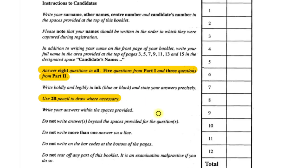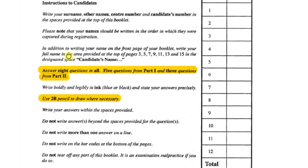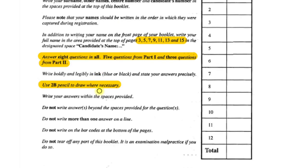When you are drawing, make sure you use your pencil. Then the general other instructions: write your candidate number, fill in the questions that you answered, and fill in the other information. In addition to writing your name on the front page of the booklet, also write your full name in the area provided on top of pages 3, 5, 9, 11, 13, and 15. This is quite interesting — they are particularly telling you that on these pages, make sure that you write your candidate's name. If you don't take time to read these instructions, you will not know this and will submit without obeying all the instructions. So just before starting your exam, make sure you go through these instructions to candidates.